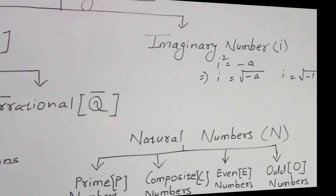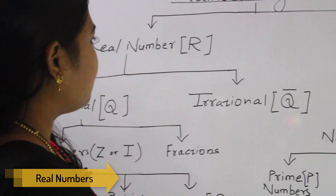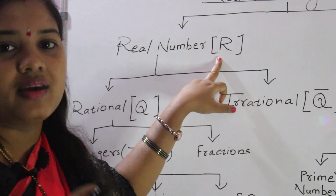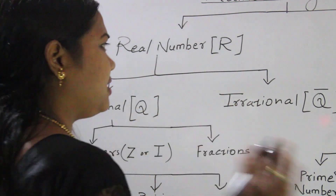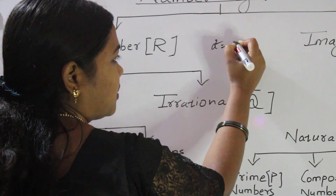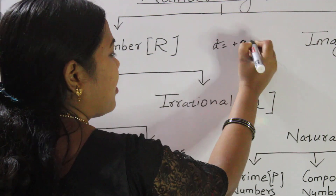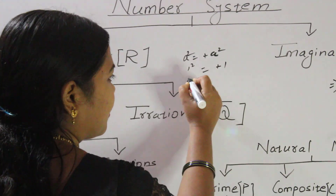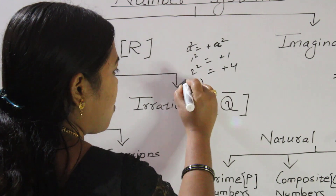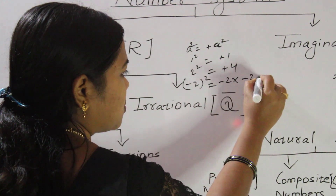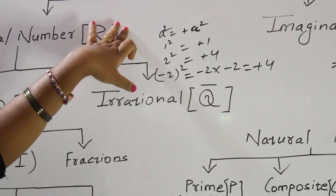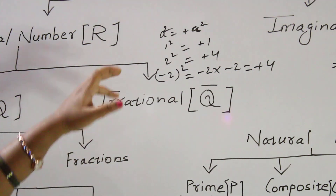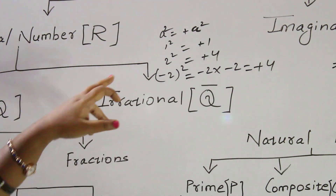Next we come to real numbers. The real number set is denoted by capital R. A real number is any number whose square gives a positive result. For example: 1² = +1, 2² = +4, and (-2)² = (-2) × (-2) = +4. So any number — whether positive, negative, a fraction, or a decimal — whose square is positive is a real number.